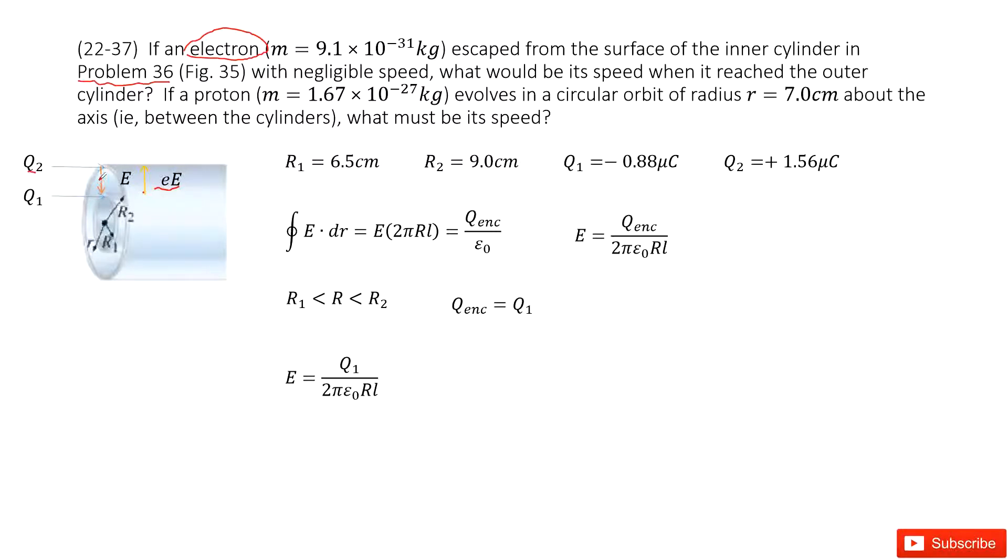So how can we do that? We can consider Gaussian's law. So we draw a Gaussian surface between these two radii, R1 and R2. And then we can see the electric field times the Gauss surface equal to enclosed charge divided by epsilon not. So the function for the electric field is enclosed charge divided by 2 pi epsilon not R times L.